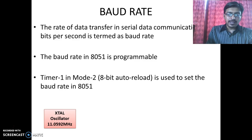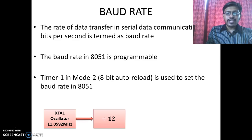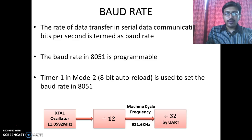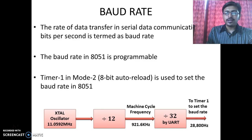Let's consider the crystal oscillator frequency is 11.0592 MHz. It is first of all divided by 12 to get the machine cycle frequency, which is nothing but 921.6 kHz. Again, the 8051 microcontroller UART circuitry divides this machine cycle frequency by 32.